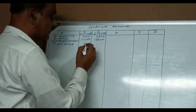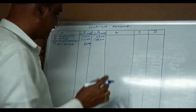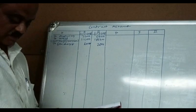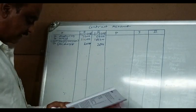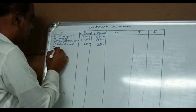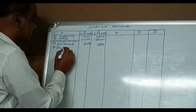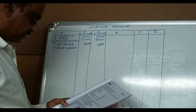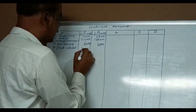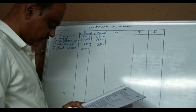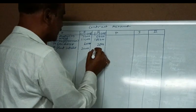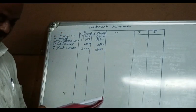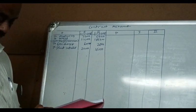General charges: first contract four thousand, second contract two thousand eight hundred. Next, plant installed: first contract twenty thousand, second contract sixteen thousand. These are the plant figures installed at the start of each contract.